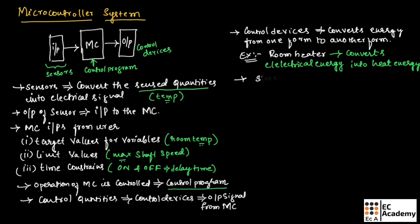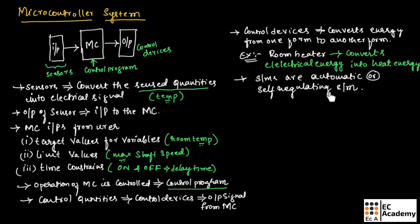In real world applications, most of the systems are automatic systems, or we can call them self-regulating systems. In an automatic or self-regulating system, once we set the system, it will continue to operate without any operator intervention — we do not require any human or operator intervention for the system to operate.